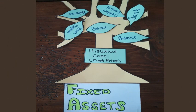Let's say the historical cost principle is a big tree — the cost price tree. We plant it here at the fixed asset accounts. Only leaves of this tree will fall on the fixed asset accounts. An entry that's not done at cost price may not be made in any one of these accounts.